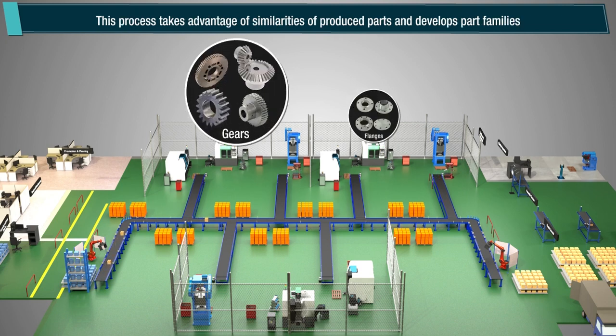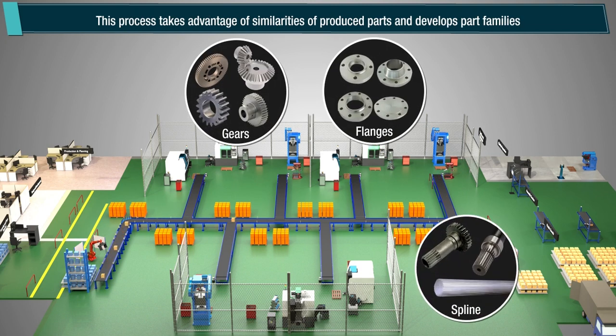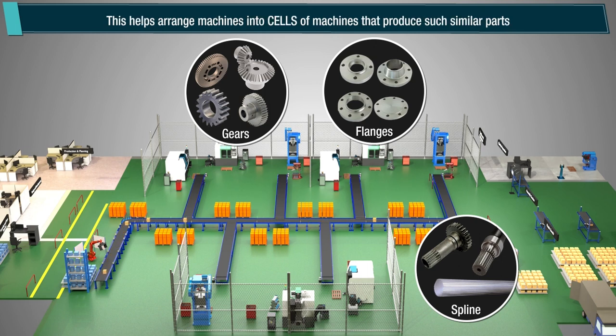This process takes advantage of similarities of produced parts and develops part families. This helps arrange machines into cells of machines that produce such similar parts.